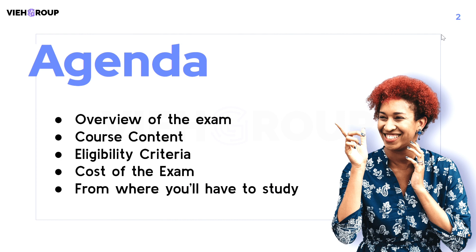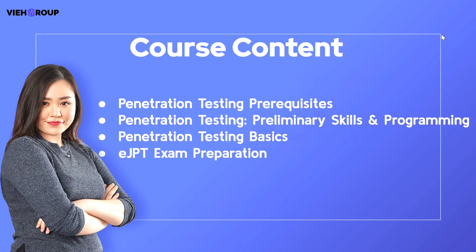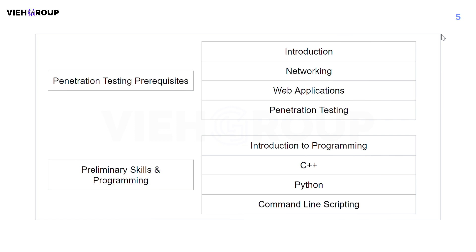The name of this exam is eLearn Security Junior Penetration Tester. The duration of this exam is 72 hours and you get 20 MCQ questions to solve. To solve these questions, you are given black boxes on which you have to perform pen testing. To clear this exam, you need to answer 15 or more questions correctly.